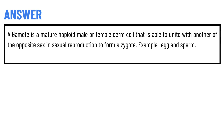The correct answer: A gamete is a mature haploid male or female germ cell that is able to unite with another of the opposite sex in sexual reproduction to form a zygote — egg and sperm.